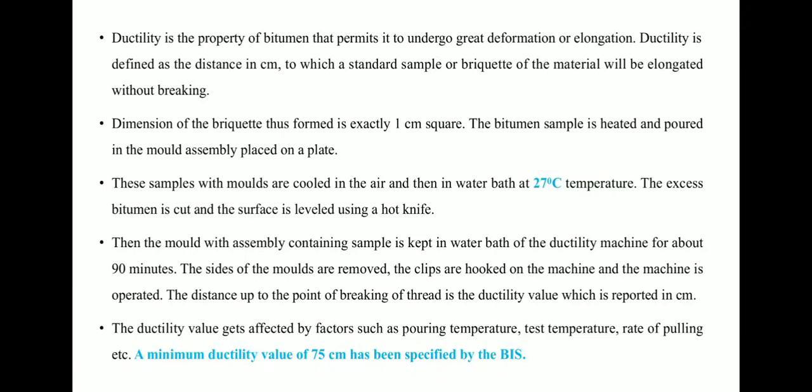The dimensions of the briquette formed are exactly one centimeter square. The sample is heated and poured into a mold assembly placed on a plate. The samples with molds are cooled in air and then in a water bath at 27°C. Excess bitumen is cut and the surface leveled using a hot knife. The mold with the sample is then kept in the water bath of the ductility machine for about 90 minutes. The sides of the molds are removed, the clips are hooked on the machine, and the machine is operated. The distance to the point of breaking is the ductility value, reported in centimeters. The minimum ductility value of 75 cm has been specified by BIS.